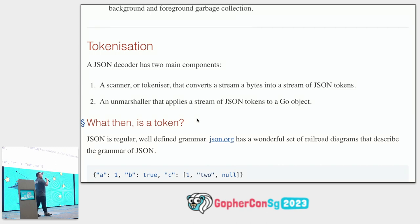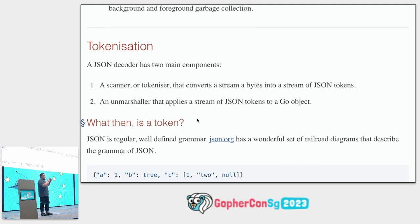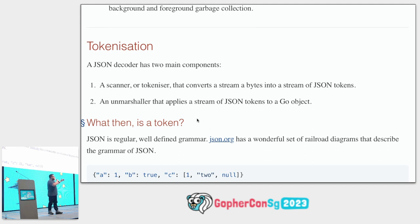At a high level, when decoding JSON we work at two levels. We have a scanner or tokenizer that reads the stream of bytes and turns it into a stream of JSON tokens. On top of that, we have an unmarshaller, which reads that stream of tokens and applies them one at a time to a Go object.